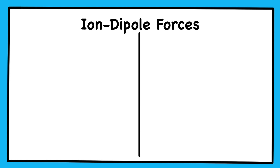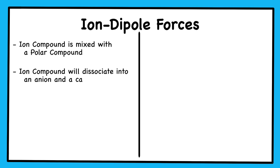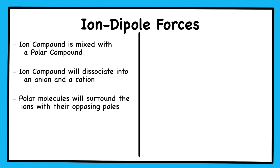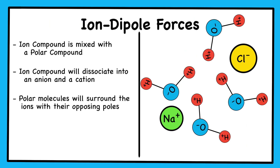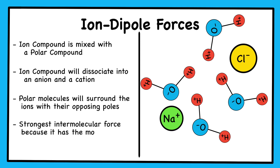Our last type of intermolecular force is ion-dipole forces. These forces occur when an ionic compound is mixed with a polar compound. The ionic compound dissociates into its respective ions, then the polar molecules surround the ions with their oppositely charged poles. So if I'm mixing sodium chloride in water, the sodium chloride would dissociate into sodium plus ions and chloride minus ions. The water molecules will orient themselves so that the positive pole is close to the chloride anion and the negative poles surround the sodium cation. Out of all the types of intermolecular forces, ion-dipole forces are the strongest and most complicated.